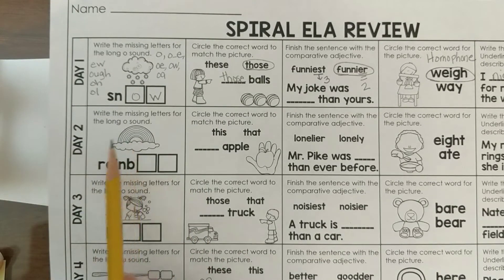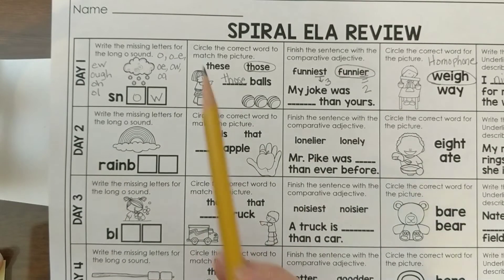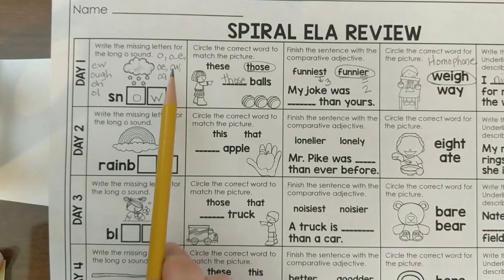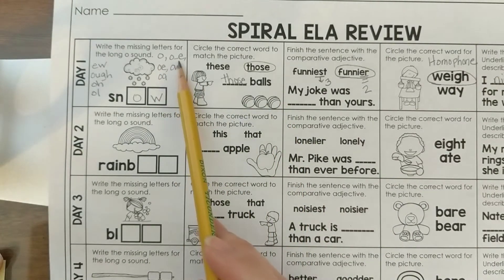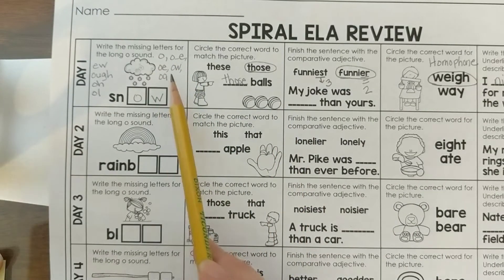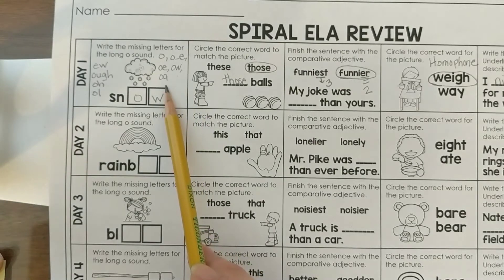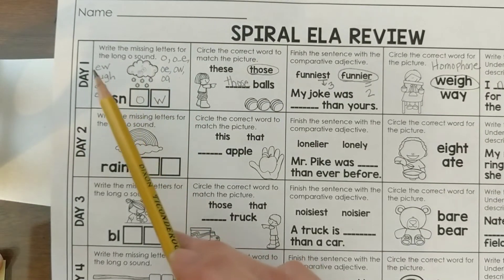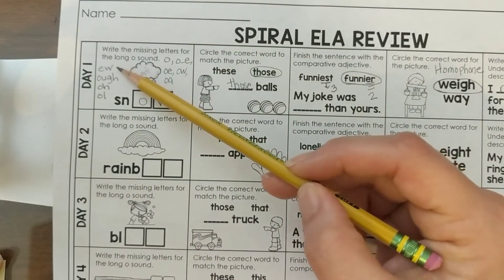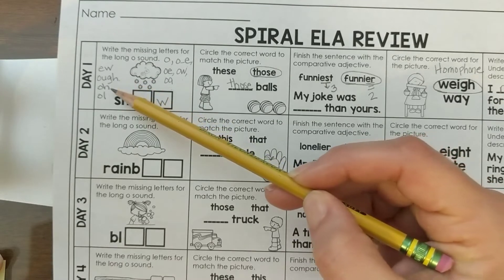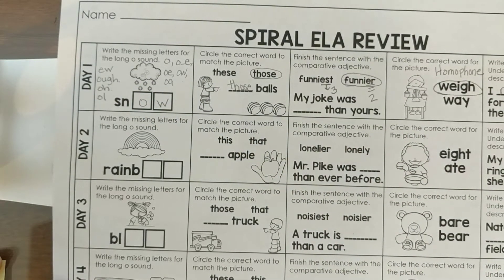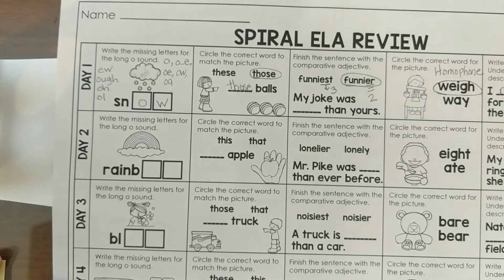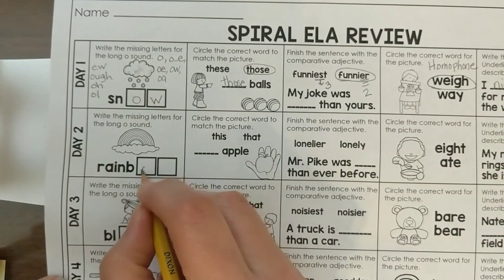We need to write the missing letters for the long O sound. Yesterday we talked about all these patterns to make the long O sound: just O by itself, O with a silent E, OE, O-W, O-A, and it could also be spelled E-W, O-U-G-H, O-H, and O-L. For rainbow, it is spelled with an O-W.